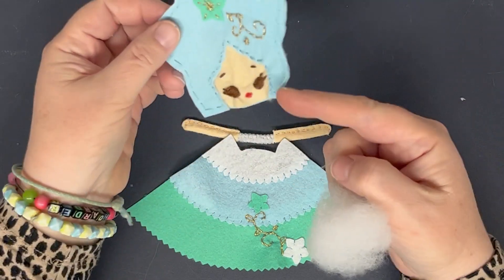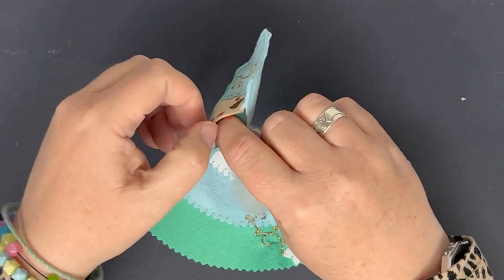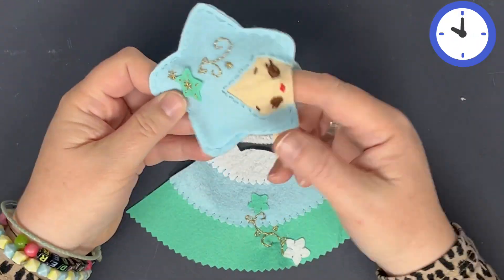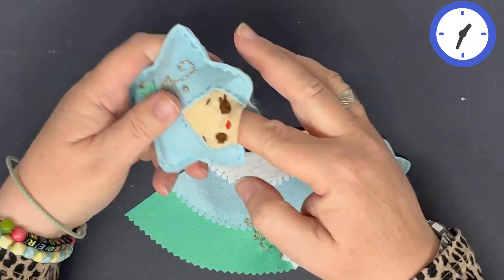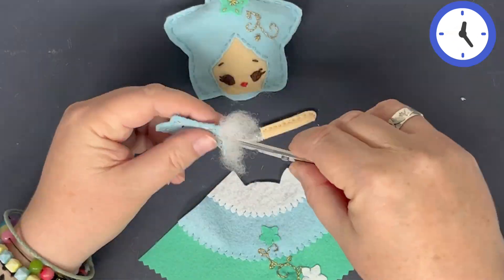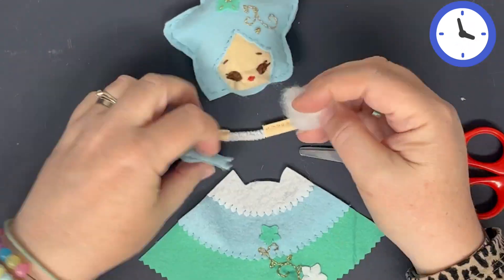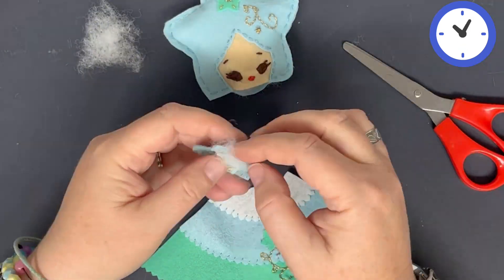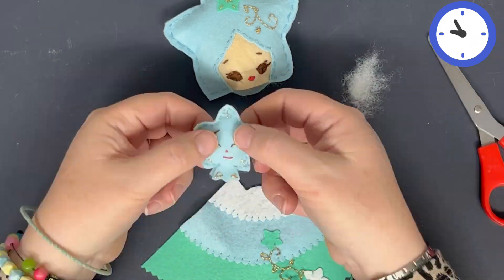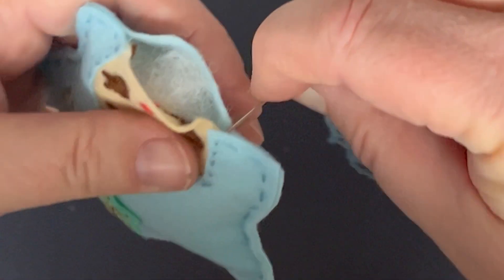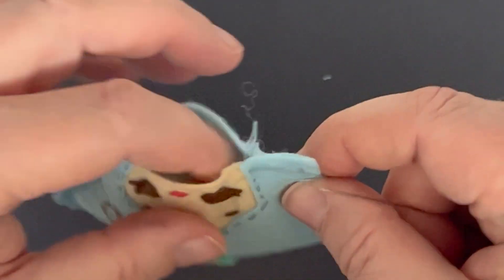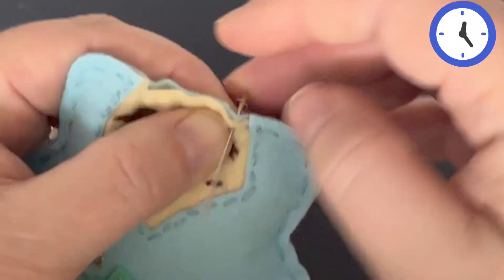Next we're going to stuff the head, so push a little bit in at a time and push it all into the corners so it's nice and even and nice and plump. Repeat with the little star. You can use a pair of scissors to push in the stuffing a little bit more. Going to just sew up the gap so the stuffing doesn't come out for the head. Do the same with the star.